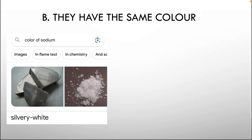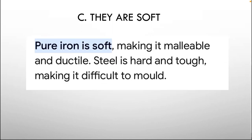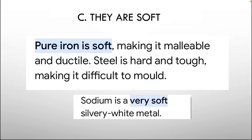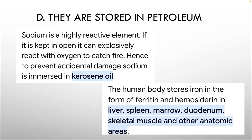Option B is incorrect because sodium is silver-white in color while gray iron is gray — they do not share the same color. Option C is incorrect because while sodium is very soft and silvery-white, pure iron is also soft and malleable, but steels are hard and tough, making this characteristic inconsistent. Option D is incorrect because sodium is stored in kerosene to prevent its explosive reaction with oxygen, while iron is stored in the body as ferritin and hemosiderin in the liver, spleen, marrow, and other areas — not petroleum.